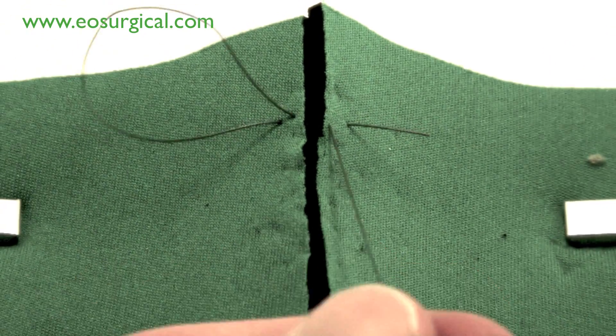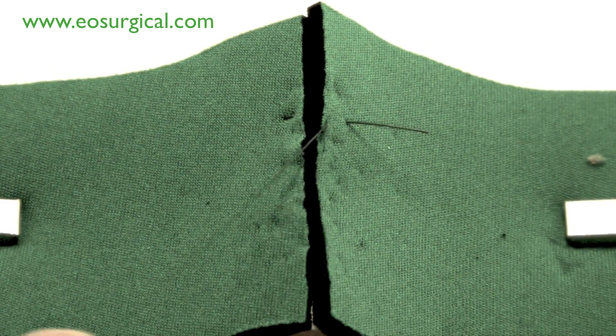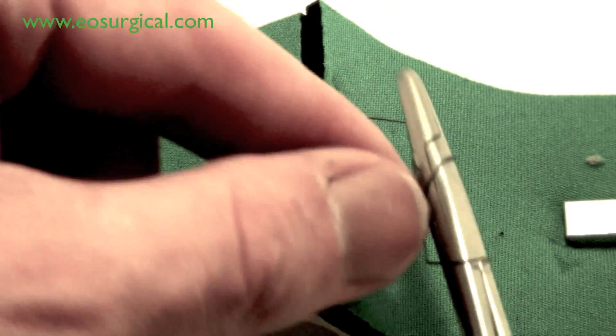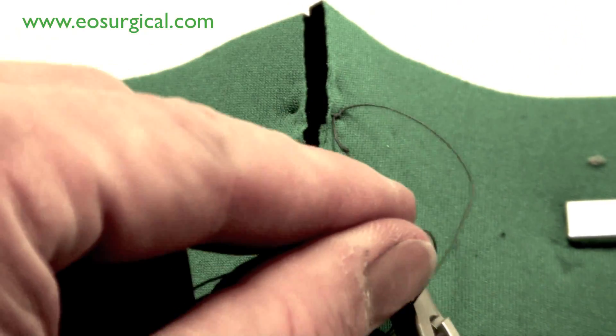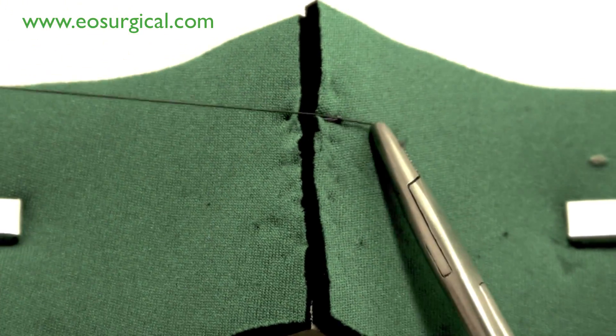Now you can see when this knot is tied just in a simple instrument tie that will cause the wound edges to evert up and to almost pout up. That's very desirable in some high tension wounds.